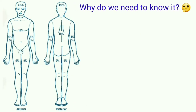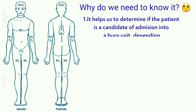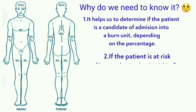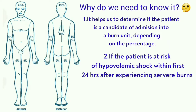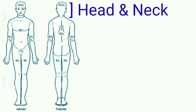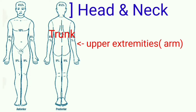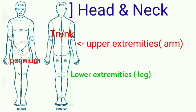Why do we need to know it? Number one, it helps us determine if the patient is a candidate for admission into a burn unit, depending on the percentage. Number two, it helps determine if the patient is at risk for hypovolemic shock within the first 24 hours of experiencing severe burns. We divide the areas into head and neck, upper extremities, trunk, perineum, and lower extremities.